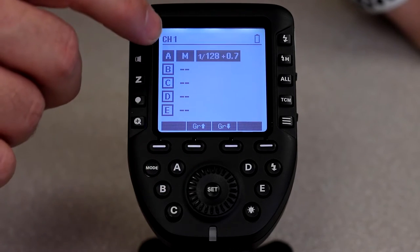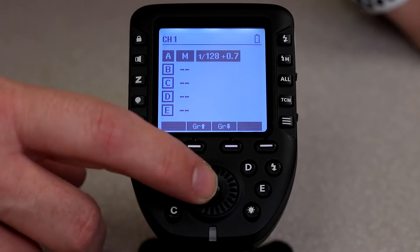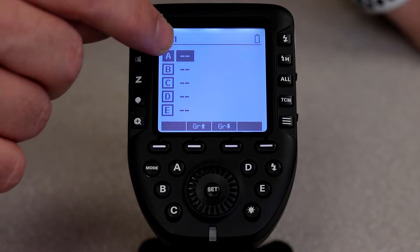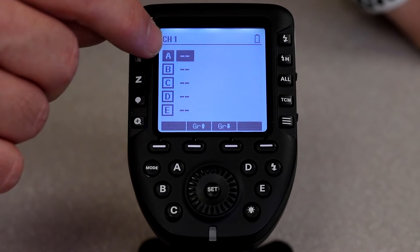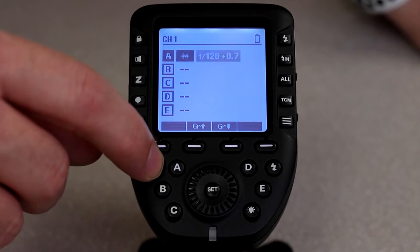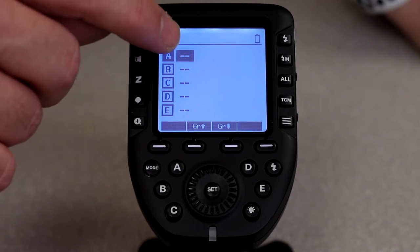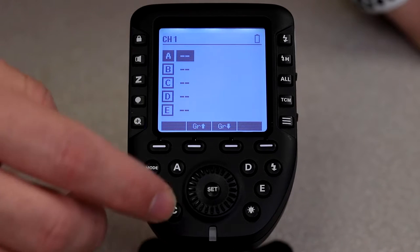The first thing I want to do is turn off A though, so if I hit A and I come in there and I click mode while it's highlighted - okay, it's got to be highlighted in black there - if I click mode, it cycles through manual, TTL, and then just off. Whenever you see the two dashes, that means it's off.